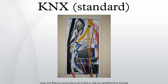Actuators receive data telegrams which are then converted into actions. This can include controlling blinds, dimming lights or controlling heating and air conditioning systems. Actuators consist of a bus coupler and an application module with a corresponding application program, which is loaded into the devices together with the project design and commissioning software via an interface connected to the PC and the bus.